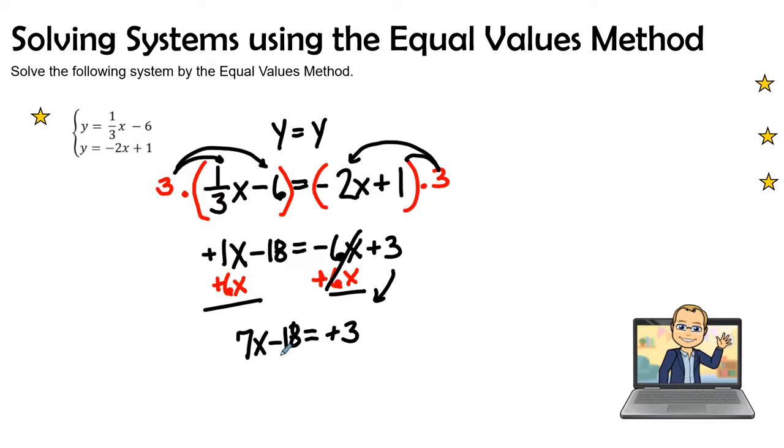So this negative 18 needs to move over to the other side of the equal sign, and so its inverse is a positive 18. So I'm going to add a positive 18 to the 3. This equals 0. I'm going to bring down my 7x.